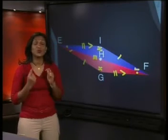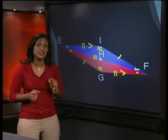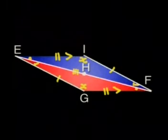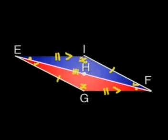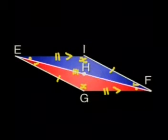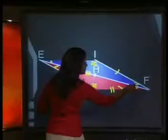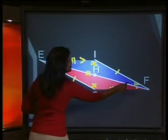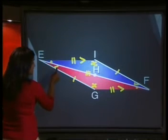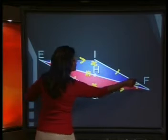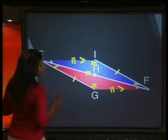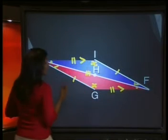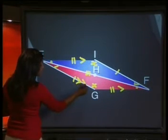Now, which angles do we need to check if we want to show that EG is parallel to IF? We have the Z shape again. We can see that the angle at F is equal to the angle at E because they have the same markings. This angle at E and this angle at F are also alternate to each other. This means that EG must be parallel to IF, and we mark this accordingly.